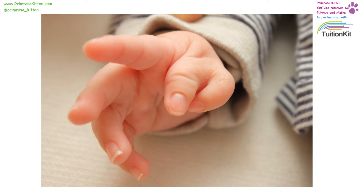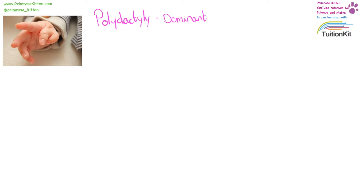Baby hands are cute as a button. I just want you to take a second to look at this picture and work out what is slightly different about it — one, two, three, four, five, six. This baby has an extra finger. This baby has what is called polydactyly and it is a dominant gene. It's a mutation that comes up quite frequently in movies — it was in The Princess Bride and in Gattaca — because it provides some quite interesting characteristics. You can play piano a lot better if you have more fingers.